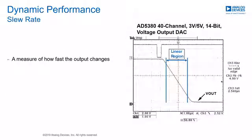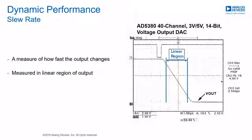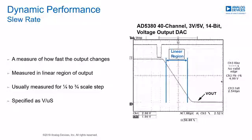Slew rate is a measure of how fast the output changes. Because the initial and final stages of the output changing can be non-linear, the slew rate is measured during the linear region of the output transition. Most slew rate measurements are taken in the linear region between one-quarter and three-quarter scale, because this removes any possible headroom and footroom issues. Slew rate is specified in volts per microsecond. The plot shows the slope of the output response of the AD5380 40-channel voltage output DAC with a slew rate of 2.5 volts per microsecond.